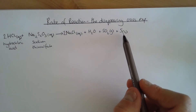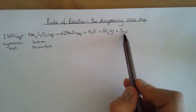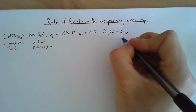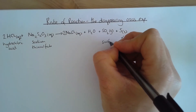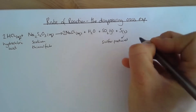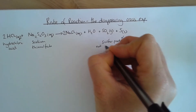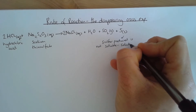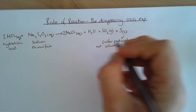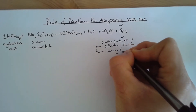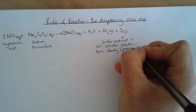The sulfur is not soluble in water, indicated by the 's' after it. What that means is that it forms a precipitate — the solution turns cloudy. So the sulfur produced causes the solution to turn cloudy, and we call that a precipitate.